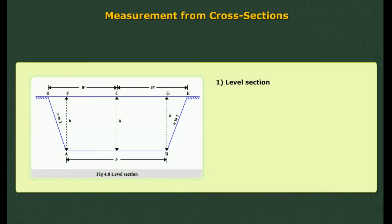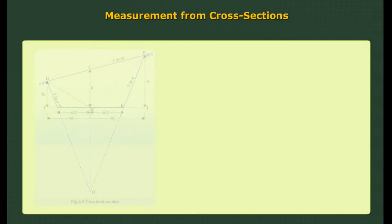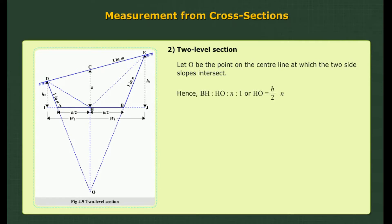Level section: In this case the ground is level transversally. Therefore H1 equals H2 equals H, and W1 equals W2 equals W equals B/2 plus NH. Let O be the point on the centre line at which the two side slopes intersect, hence HO equals B/2 into N.